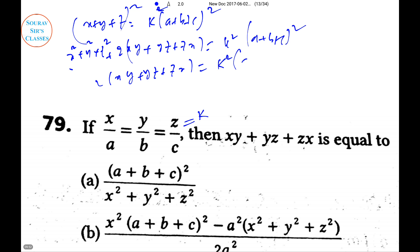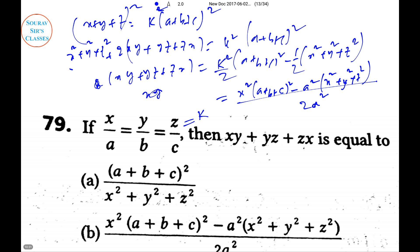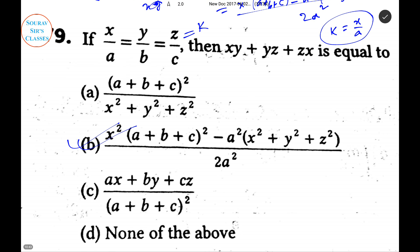From the squared equation: 2(xy + yz + zx) = k²(a+b+c)² − (x²+y²+z²), so xy + yz + zx equals that divided by 2. Since k = x/a, we substitute to get: [x²(a+b+c)² − a²(x²+y²+z²)] / (2a²). This matches option B directly. We substitute k = x/a because the options are expressed that way; otherwise we could use y/b or z/c.